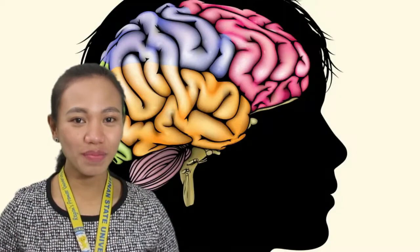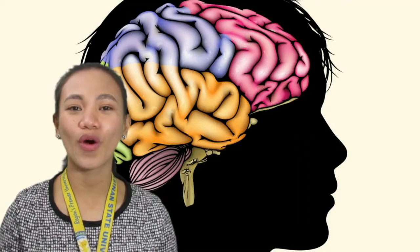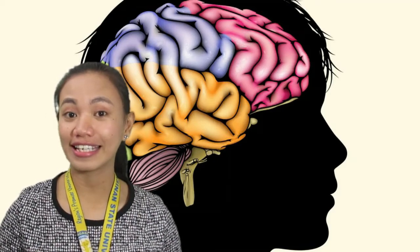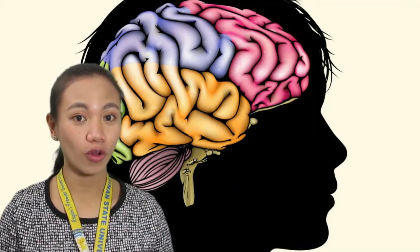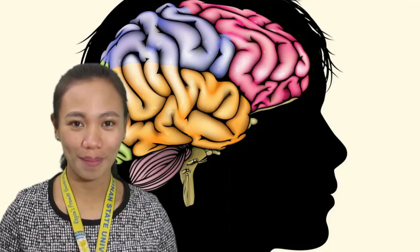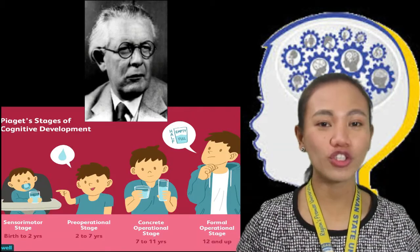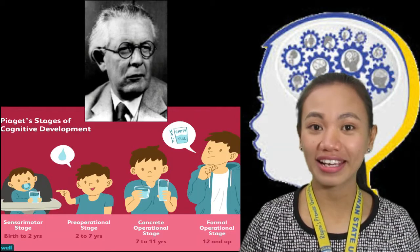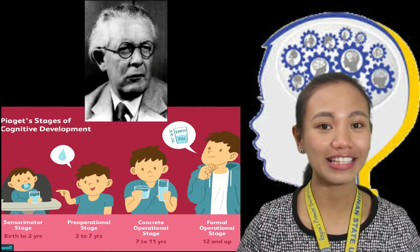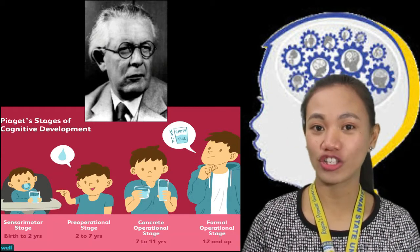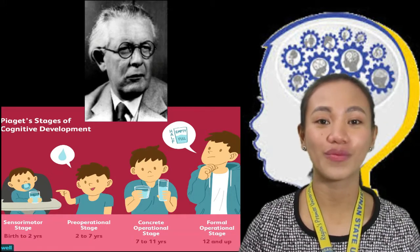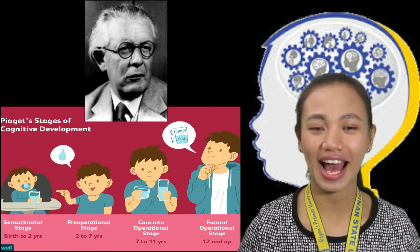According to Piaget, children are born with a very basic mental structure, genetically inherited and evolved, on which all subsequent learning and knowledge are based. The goal of the theory is to explain the mechanisms and processes by which the infant and then the child develops into an individual who can reason and think using hypotheses.